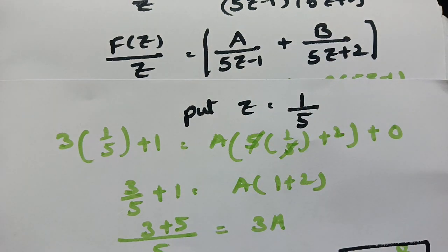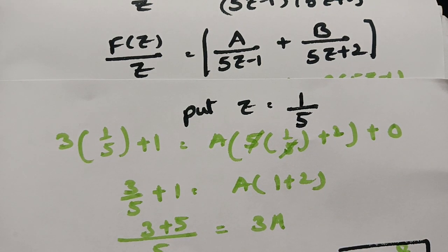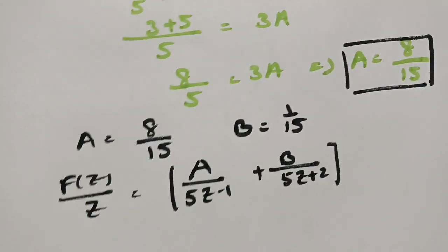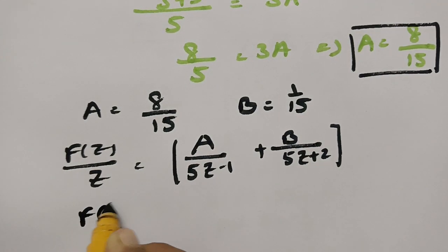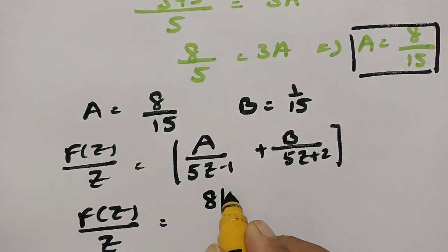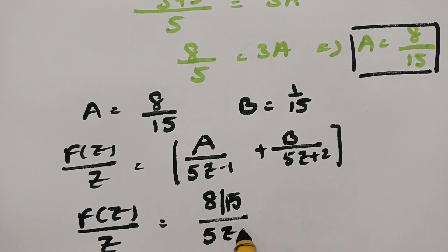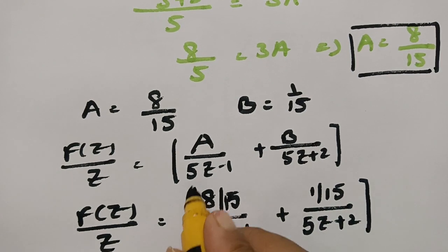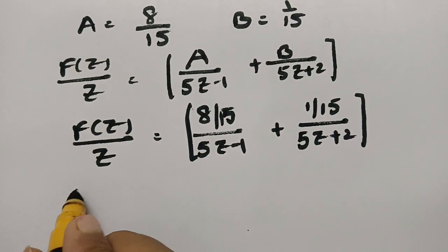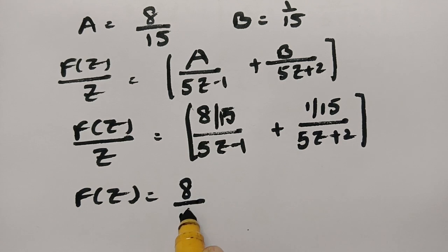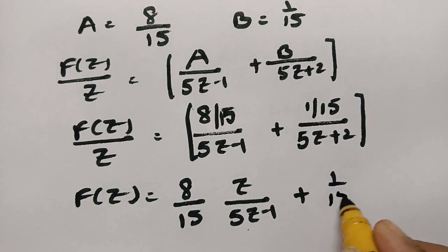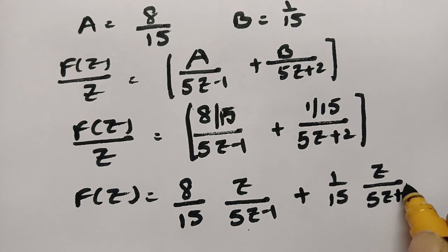Substituting A = 8/15 and B = 1/15 back: F(Z)/Z = (8/15)/(5Z - 1) + (1/15)/(5Z + 2). Multiplying both sides by Z: F(Z) = (8/15) · Z/(5Z - 1) + (1/15) · Z/(5Z + 2).